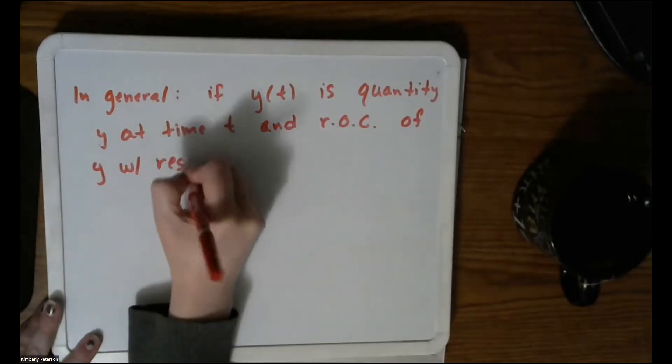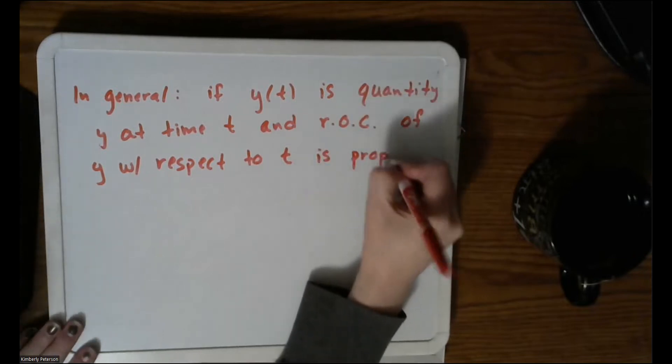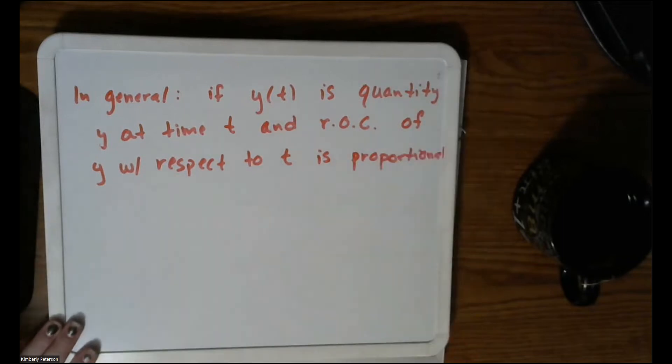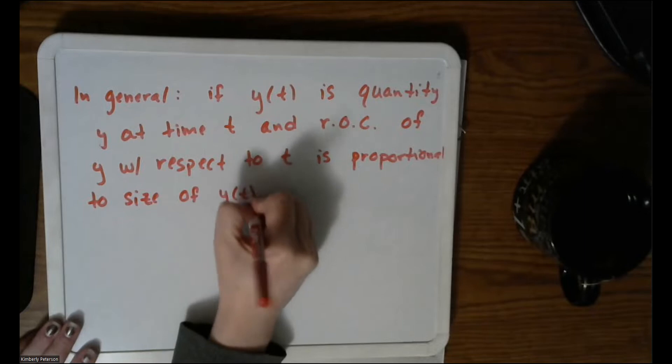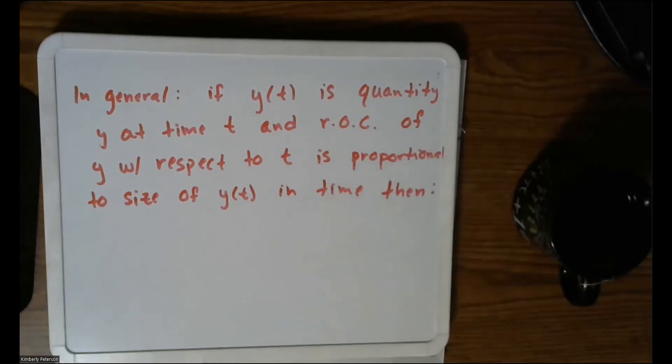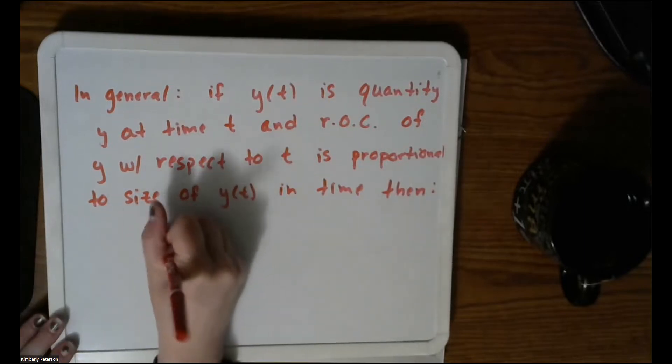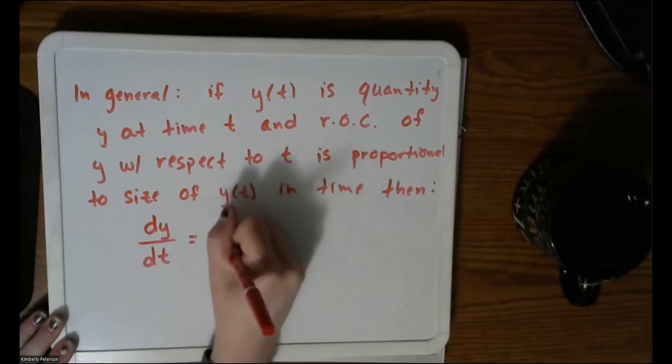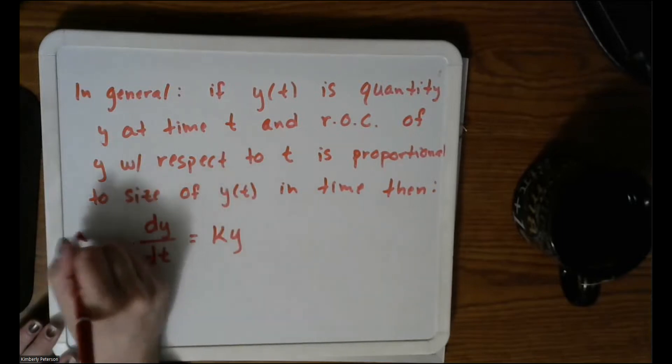So in general, if y(t) is a quantity y at time t, and the rate of change of y with respect to t is proportional to the size of y(t) in time, then we have the following. So I'll give us a minute to decipher all of this. So we just have some function y, it's related to time, and we're going to take its derivative. And in doing so, it'll be proportional to the size of y. Then you can say dy/dt, its derivative, is just k times y.